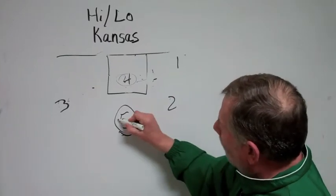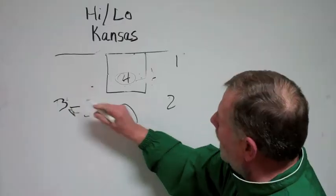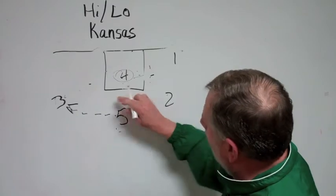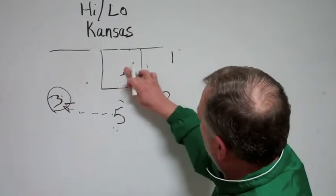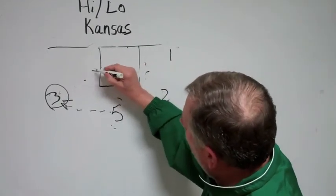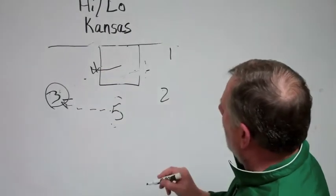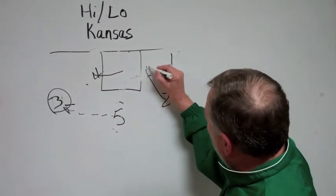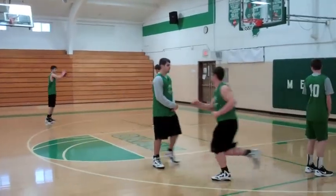We'll say nobody was open. Five will reverse the ball here to three. So we've got the ball over with three. Four continues to follow across the ball and post up. We'll take two down, set a screen. Five will come,